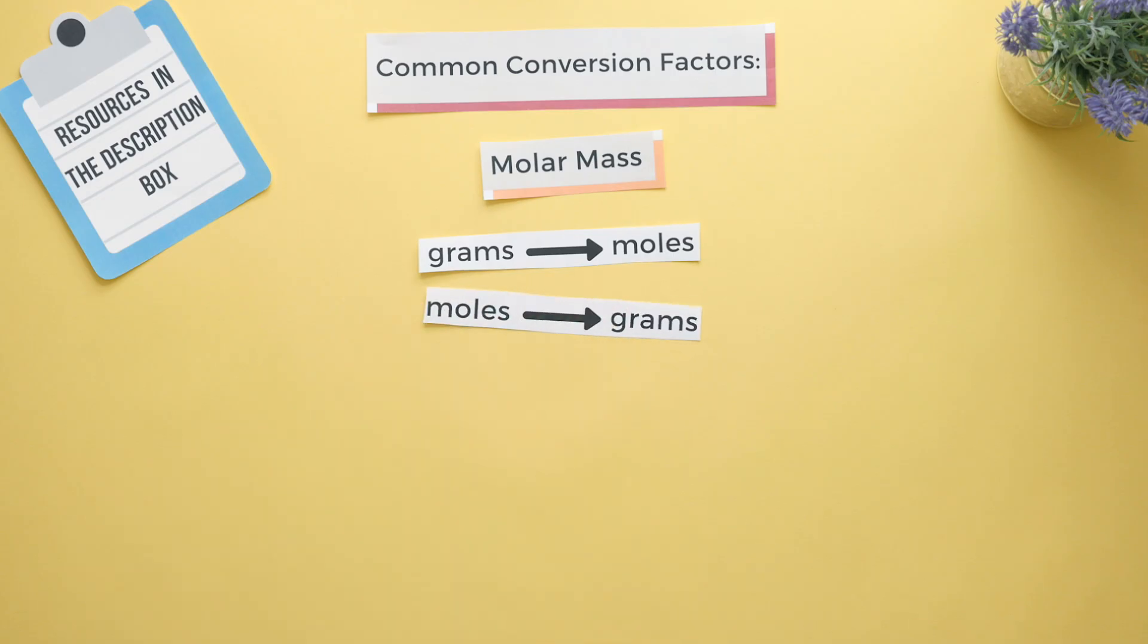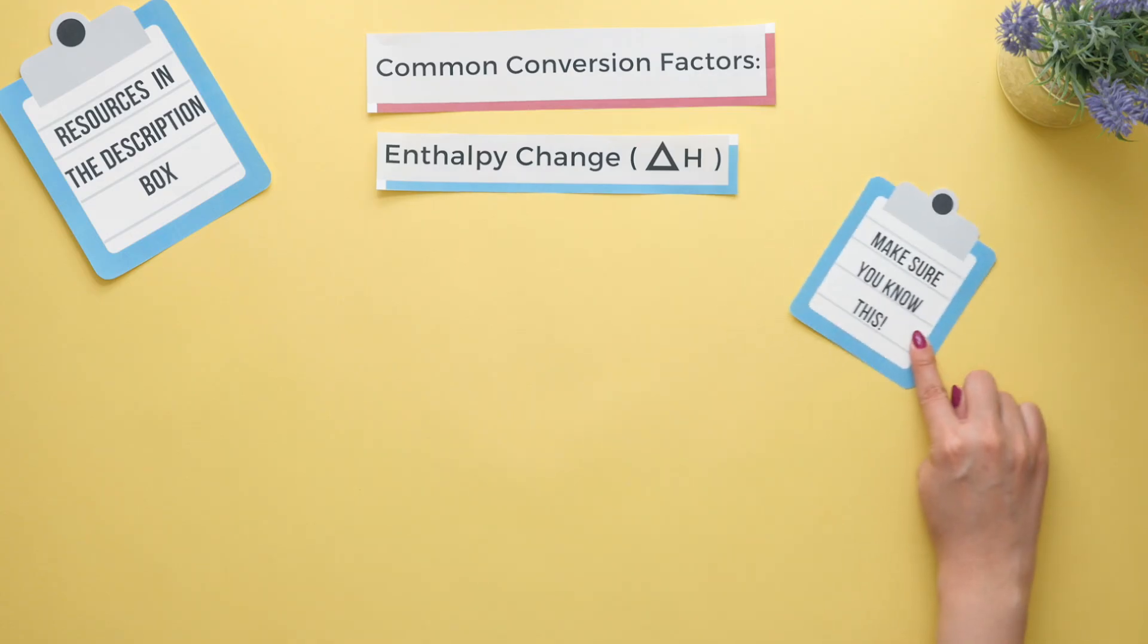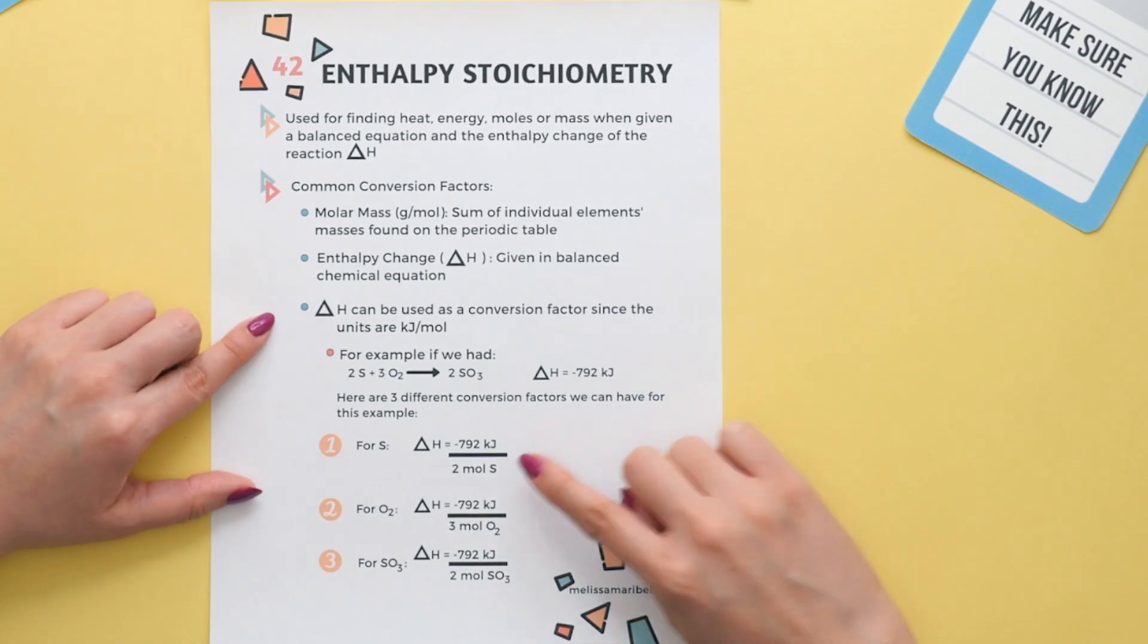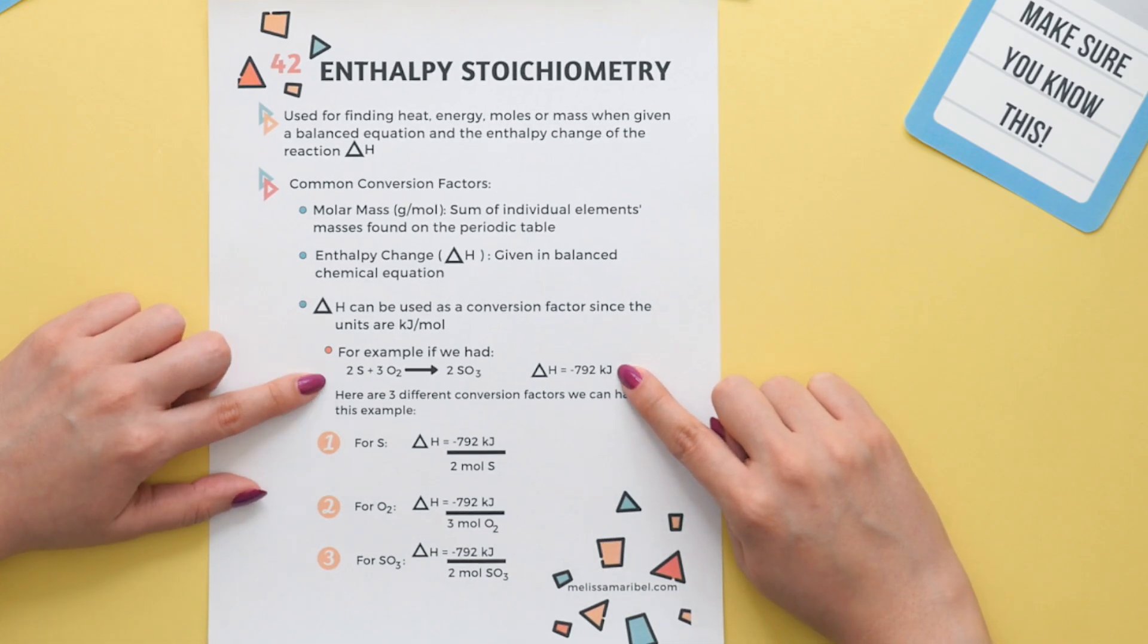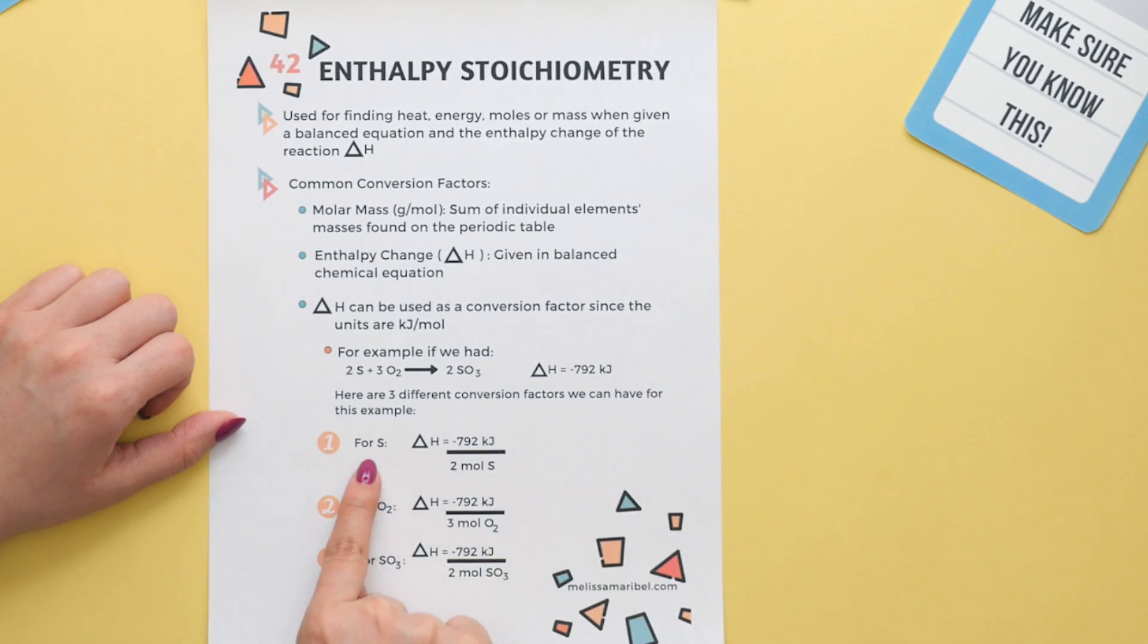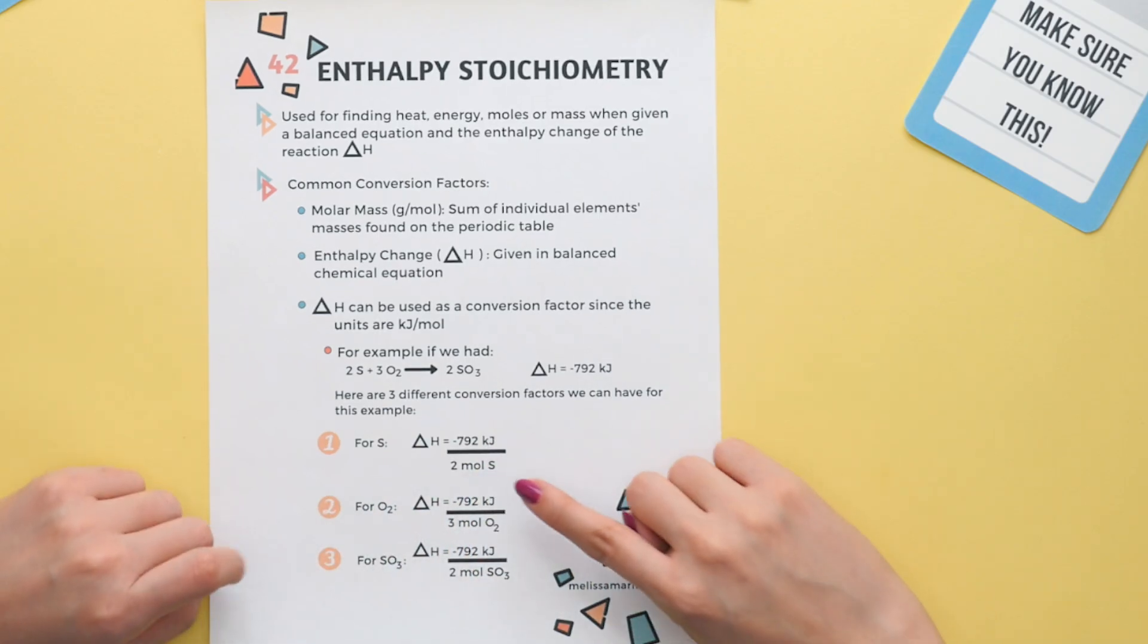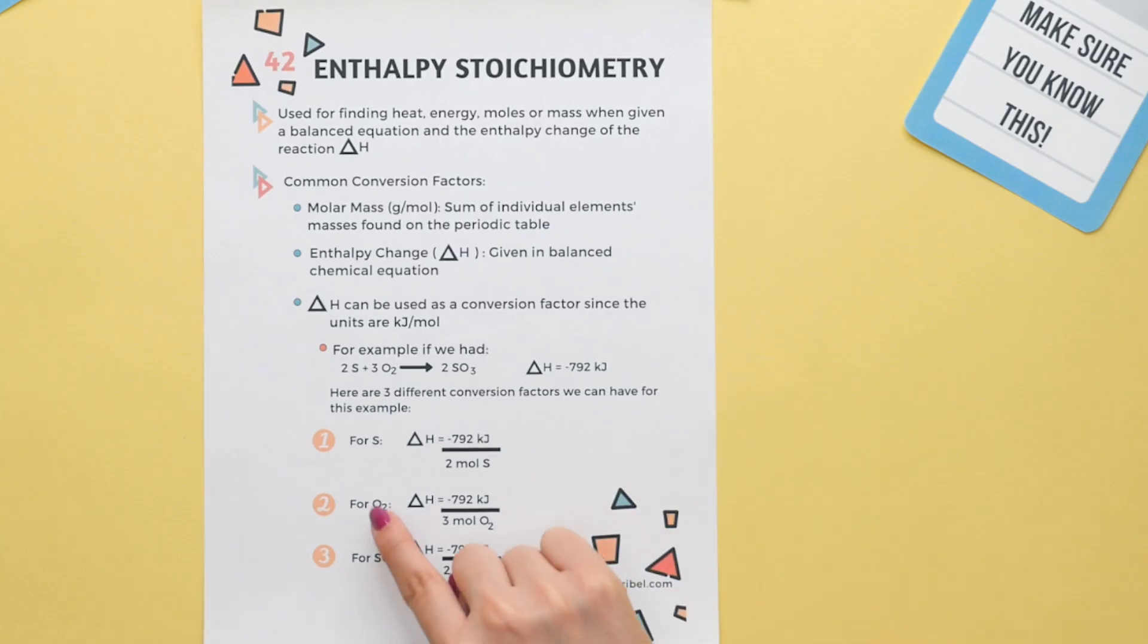The new conversion factor we will be using is the enthalpy change. This is extremely important. Now let's say we have this balanced equation with our enthalpy change. There are three different conversion factors we have for this example because our enthalpy change has the units of kilojoules per mole. If we were looking for sulfur then we would place the number of moles for sulfur which is two moles as shown on our balanced equation and we'll leave the kilojoules on top. What keeps changing is the number of moles on the bottom based on whatever element you are looking for.